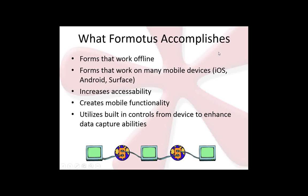So what Formotus accomplishes: forms that work offline, forms that work on mobile devices — iOS, Android, Surface, Kindle. Pretty much any mobile device you can think of is going to have some kind of support with Formotus. This really increases accessibility because you've granted almost every person with a mobile device access to your forms with the correct credentials. It also utilizes the built-in controls from a device — things like your location control, GPS, and camera capture — all things that aren't available in your traditional InfoPath but are fully utilized in this app.